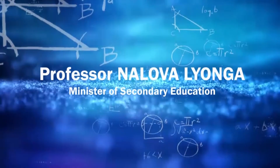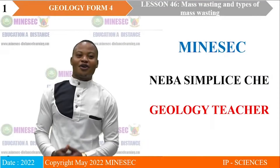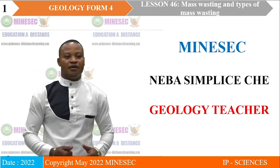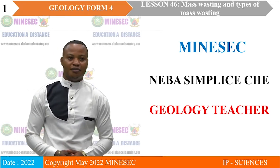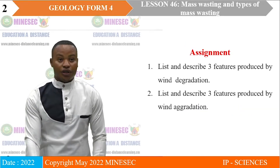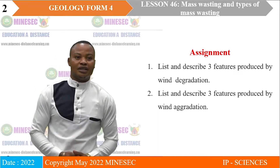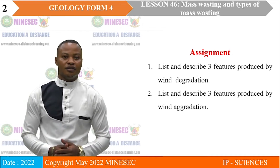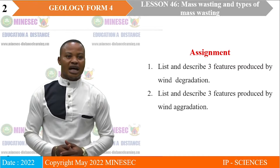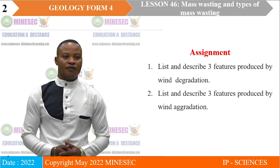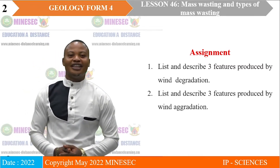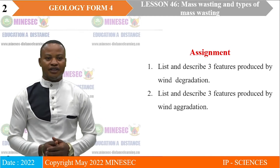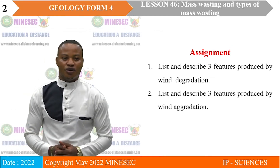Welcome to lesson 46 of your distance learning program for Geology Form 4 with Neba Simplice Chair. In order to move to our lesson 46, we begin with correction of the assignment from lesson 43. The assignment was, firstly, to list and describe three features produced by wind degradation, and secondly, list and describe three features produced by wind aggradation.